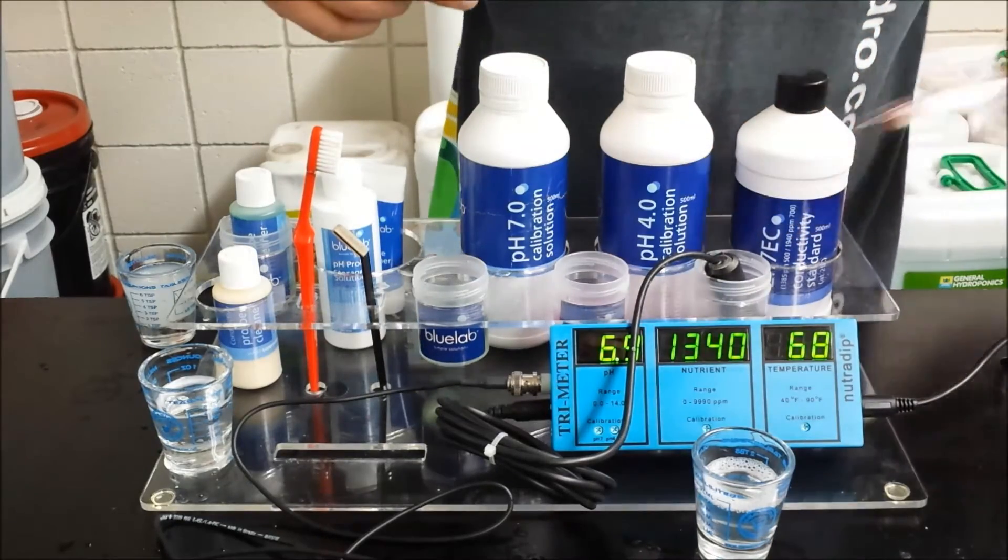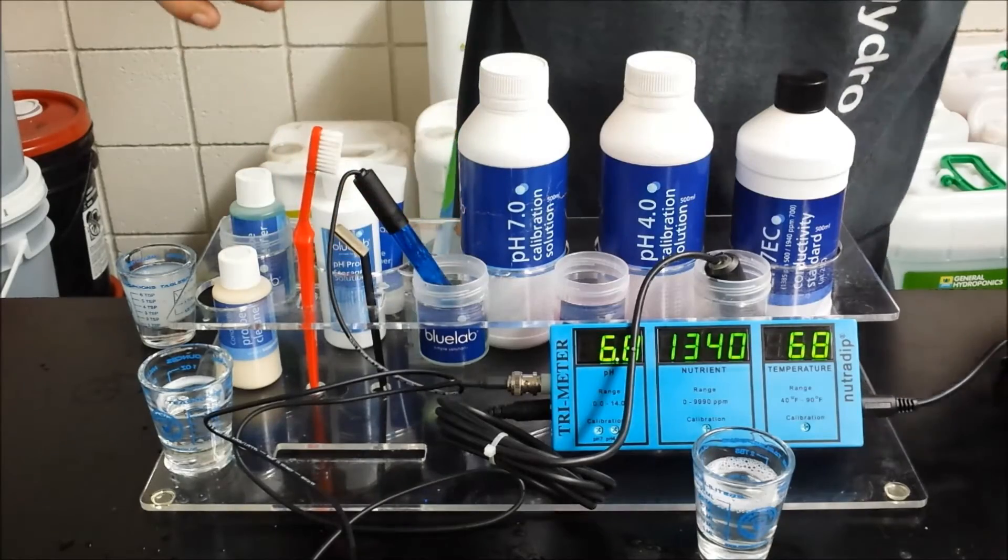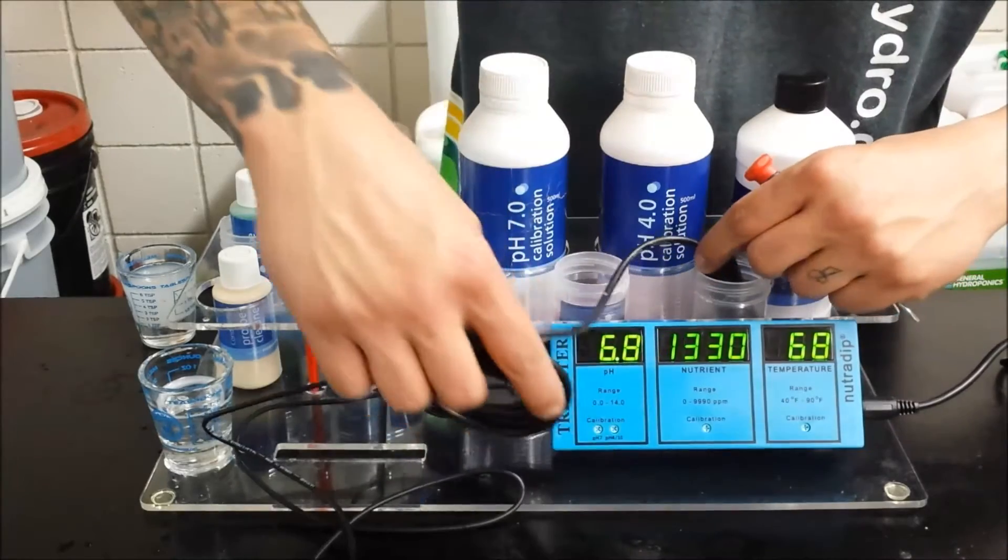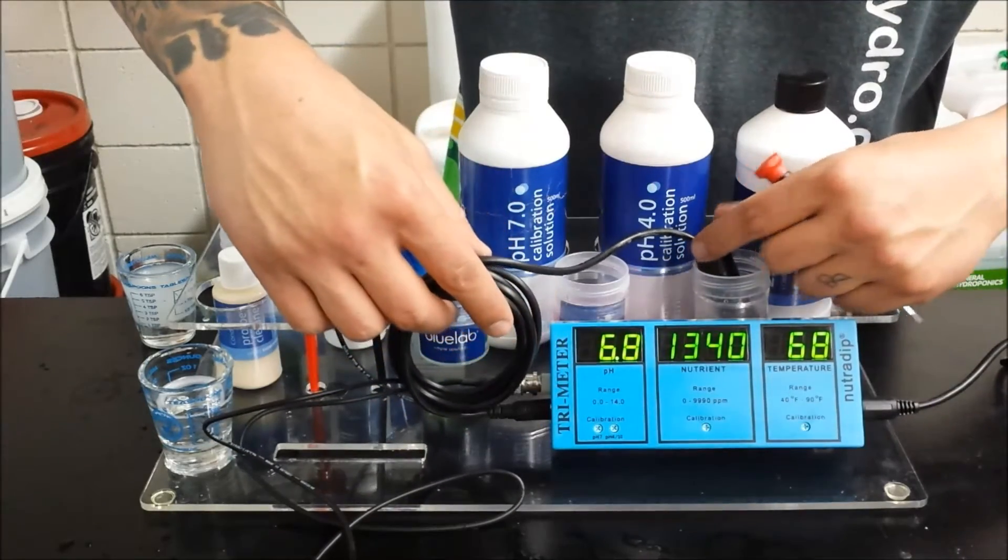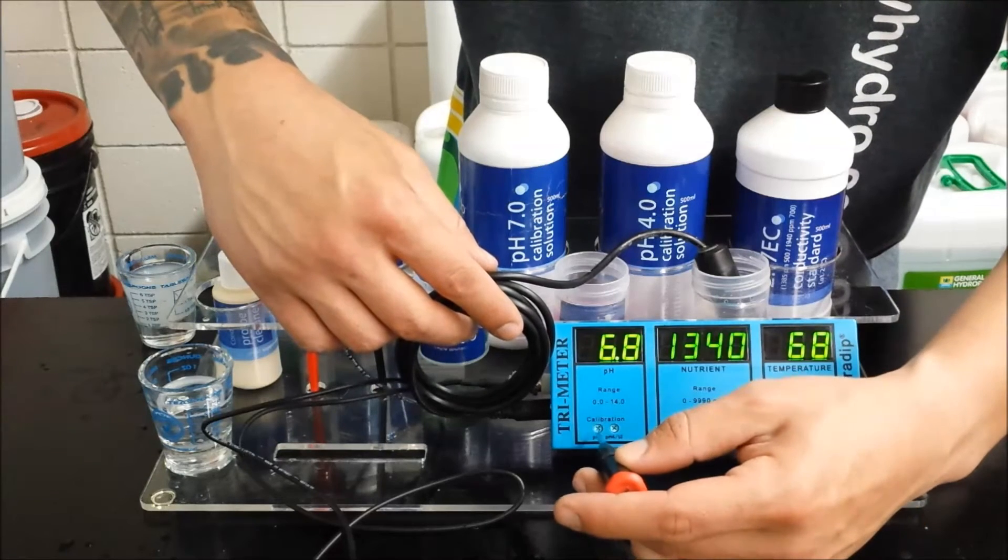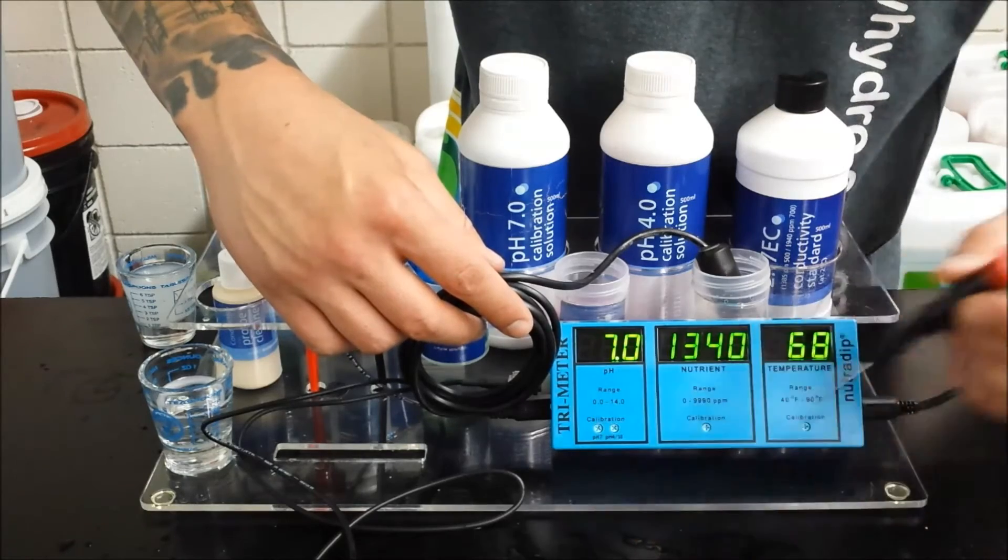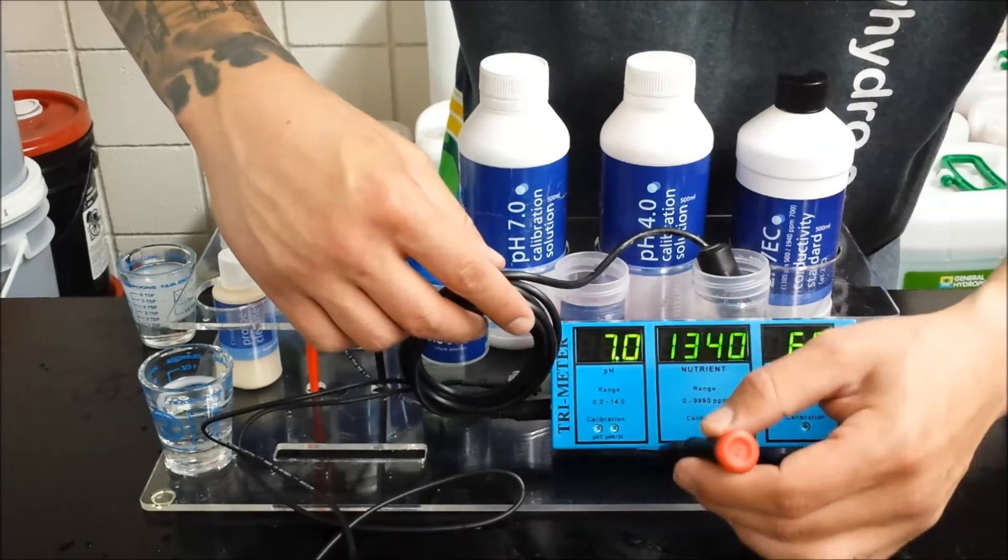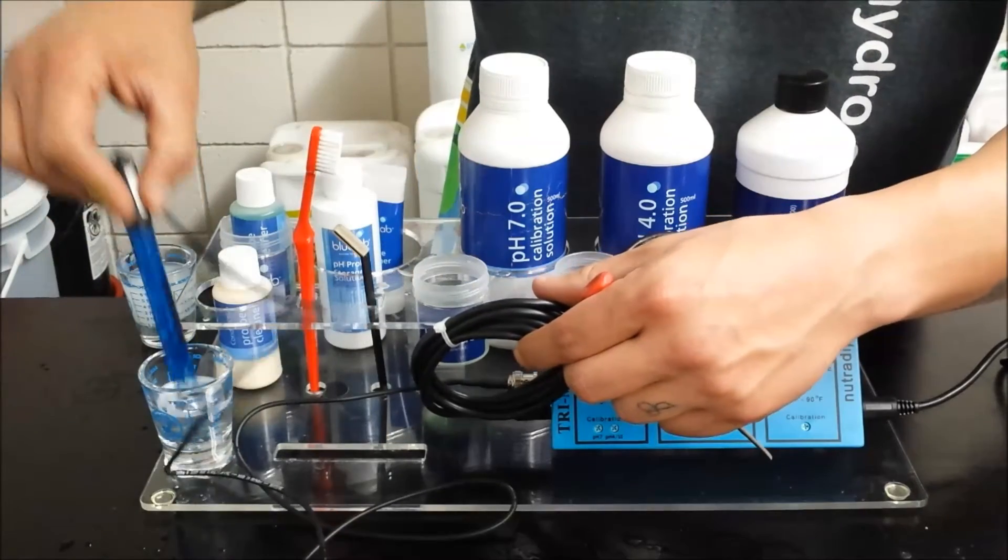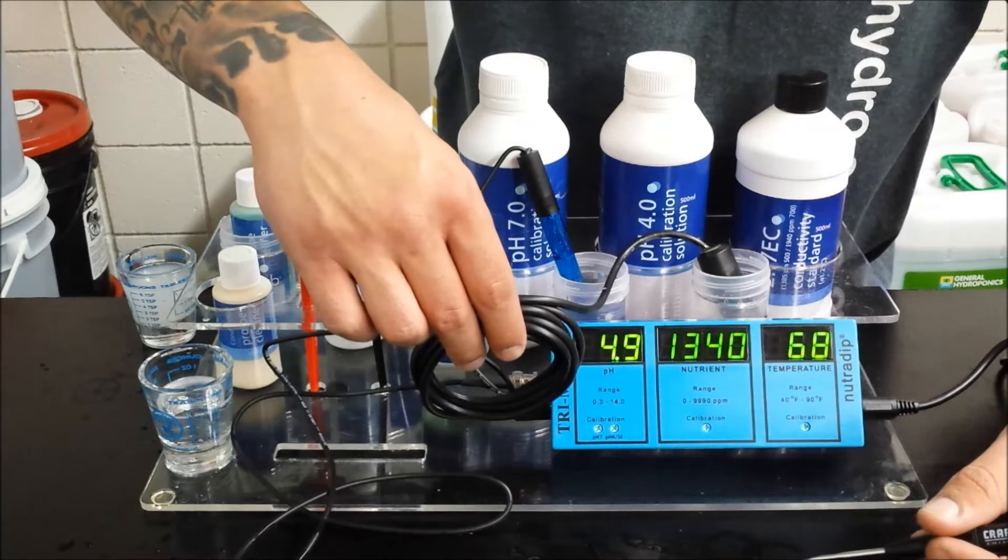Once your temperature is calibrated, now you're ready to do your pH and ppm. So we have 7.0 pH solution. You want to adjust the 7 screw until it reads 7.0. Rinse it off in water, then go to the 4.0.